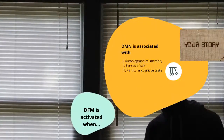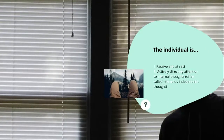Let's look more specifically into what the default mode network is associated with — in other words, the function of it. One that is very important for our discussion about depression is that it is associated with autobiographical memory, the different senses of self that we have, and some very particular cognitive tasks. The default mode network is activated when the individual is at rest and not actively directing their attention to something external, but instead directed toward internal thoughts, or what are called stimulus-independent thoughts.